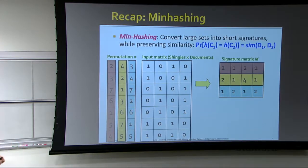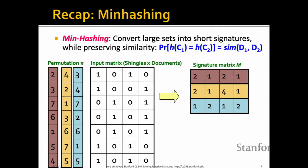The next step is MinHashing. We want to convert very large sets of shingles into a more compact representation while still preserving similarity. In a large corpus with millions of documents, we could have hundreds of thousands of shingles, making the matrix very tall. The key property is that the probability of two documents having the same hash should equal their Jaccard similarity. We take our input matrix — columns are documents, rows are shingles — and perform permutations.